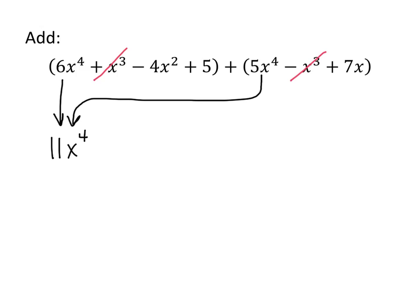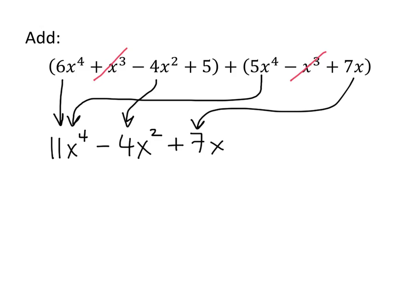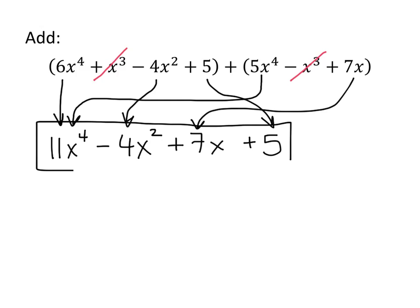What about x squareds? Well, in the first polynomial we have negative 4x squared, and we don't have any x squareds in the second polynomial. So we simply copy that term down: negative 4x squared. What about x to the first, or just x? We don't have any x's in the first polynomial, but we have 7x in the second polynomial, so we just have 7x. And then finally, constants — all we have is a plus 5 in the first polynomial, so we just have plus 5. And that's our answer. We call this collecting like terms — we collect together powers of x that are the same.